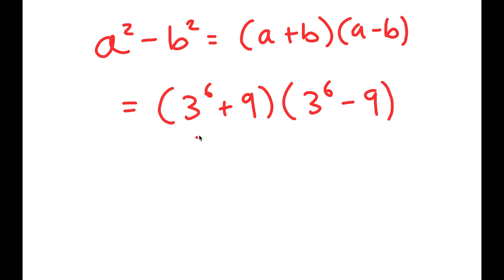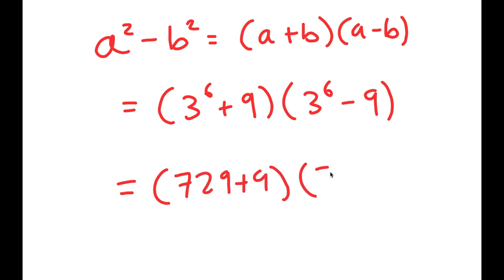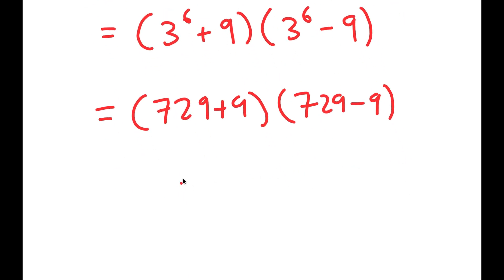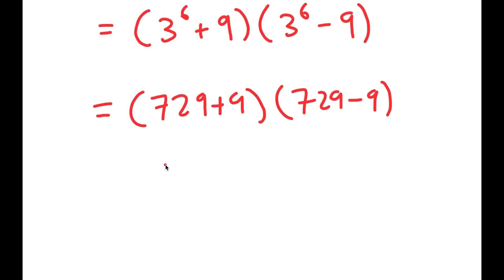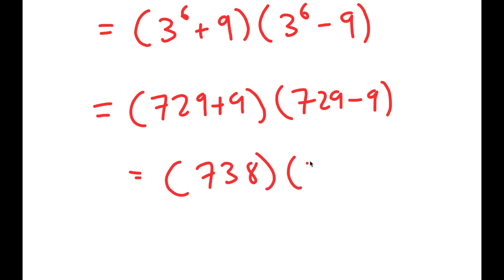Now, 3 to the power of 6 is equal to 729. So I get (729 + 9) times (729 - 9), which is equal to 738 times 720.